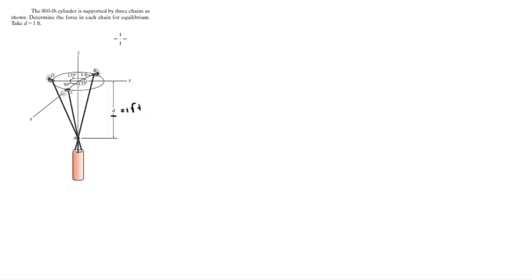The first thing you want to do in this problem is find all the points involved. A is at 0 in the i plus 0 in the j minus 1 in the k since D is 1 foot. B is at minus sine of 45 in the i plus cosine of 45 in the j plus 0 in the k, which is equal to negative 0.707 in the i plus 0.707 in the j plus 0 in the k.